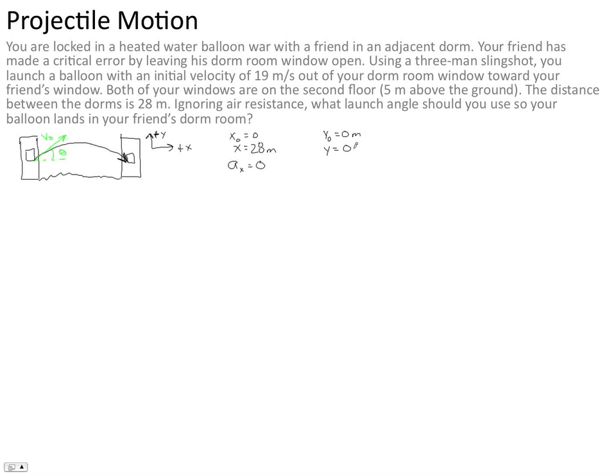Okay, which means that the water balloon, the vertical position where the water balloon leaves our dorm room is exactly the same as the vertical position where it lands at your friend's dorm room. Okay, so y0 and the final y position are 0 meters.